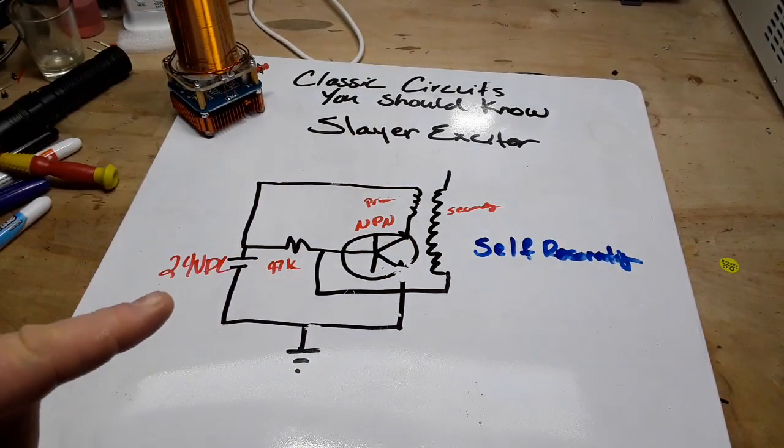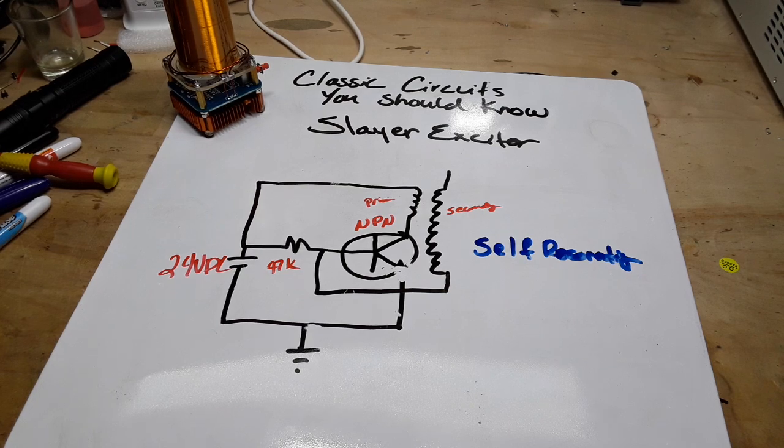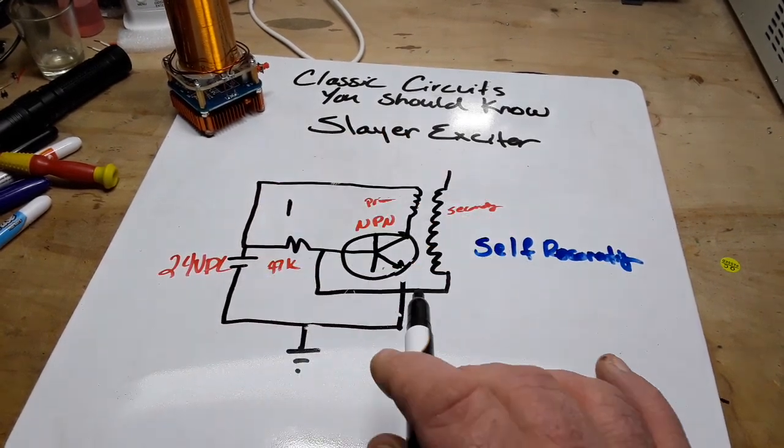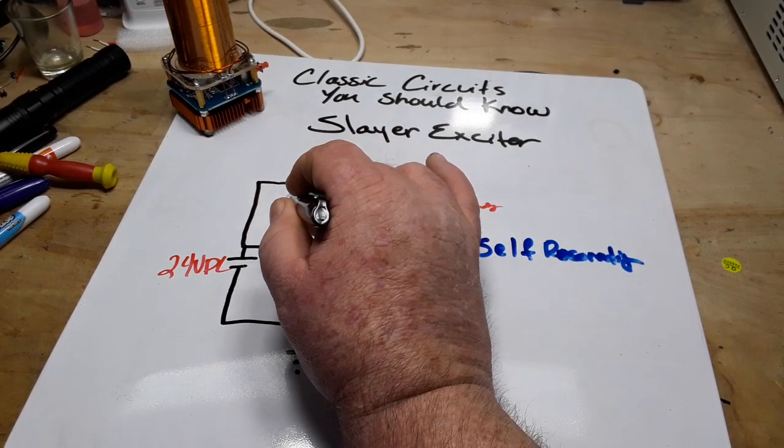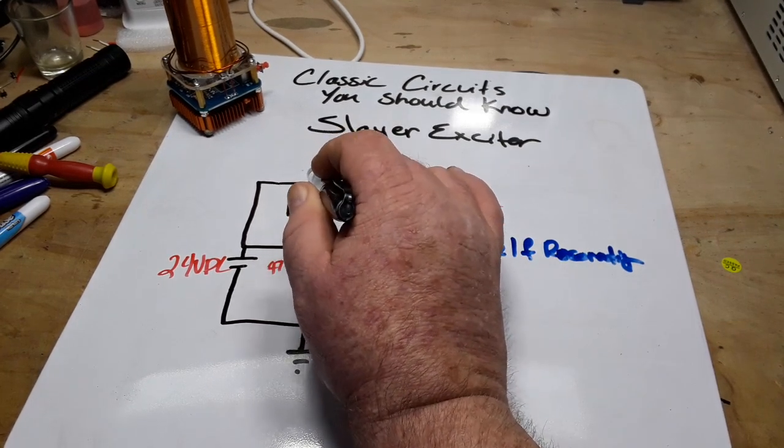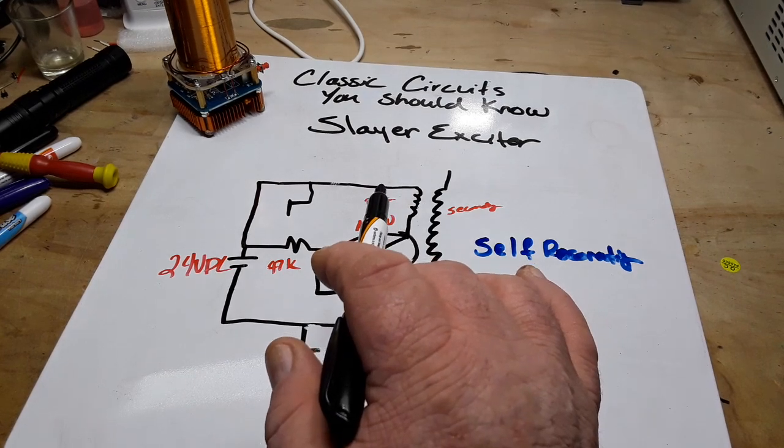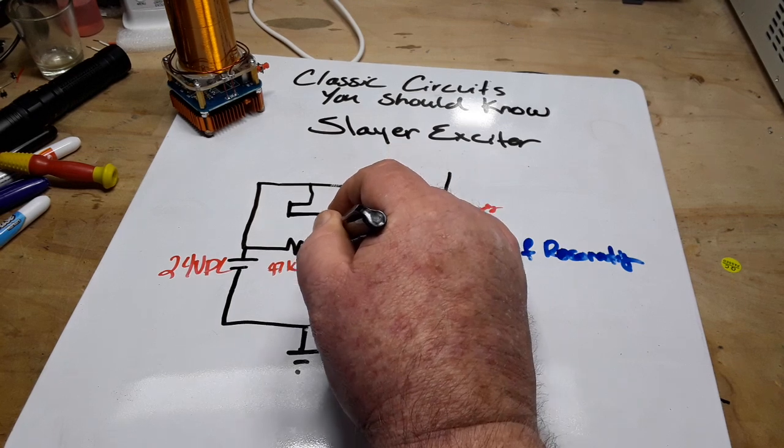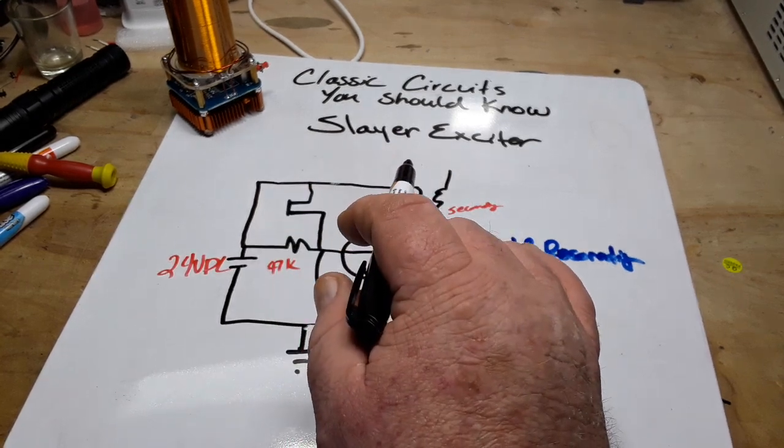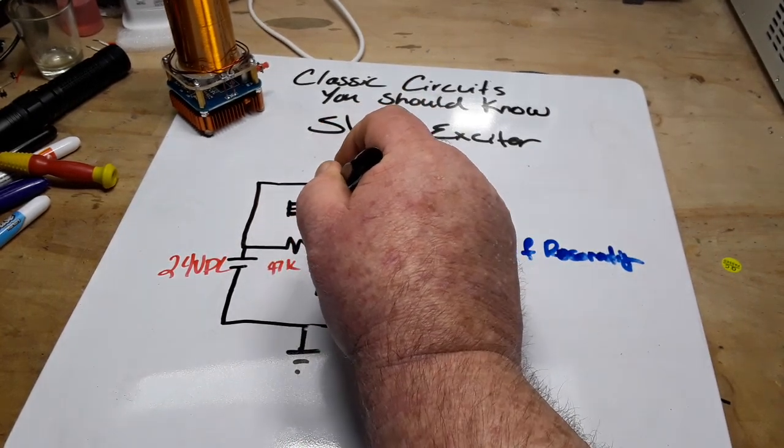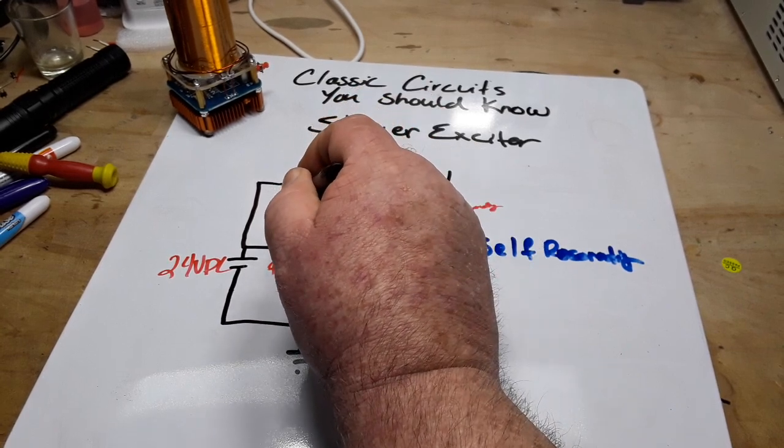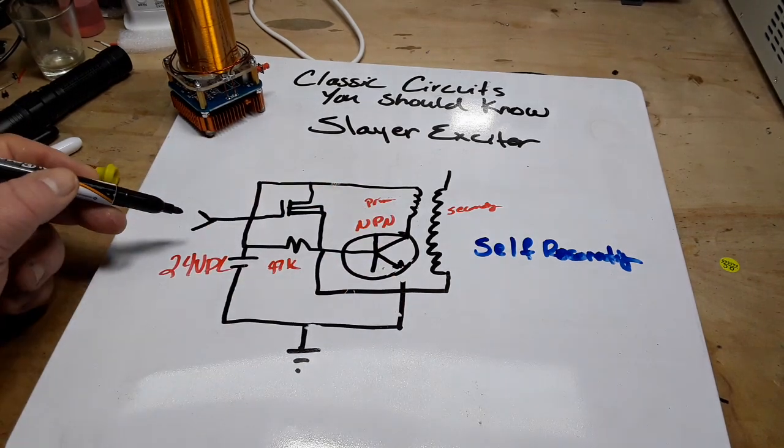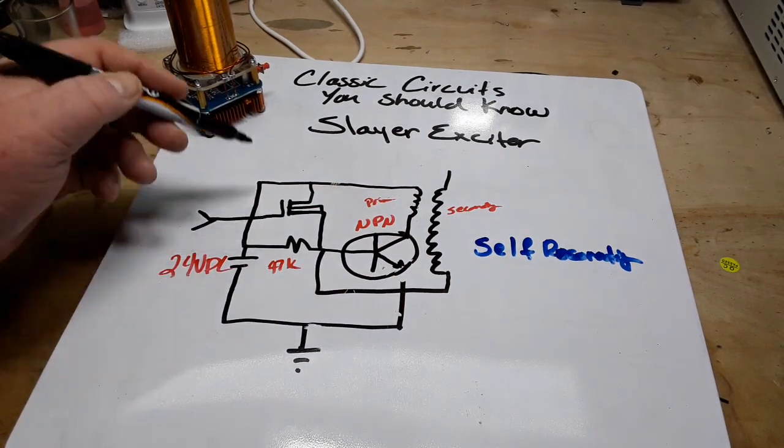The reason it does is because it has a music input. So basically what they've done with this circuit here to make it a musical Tesla coil, they put a MOSFET in here that goes up to there and that one comes down kind of to here, like that one.